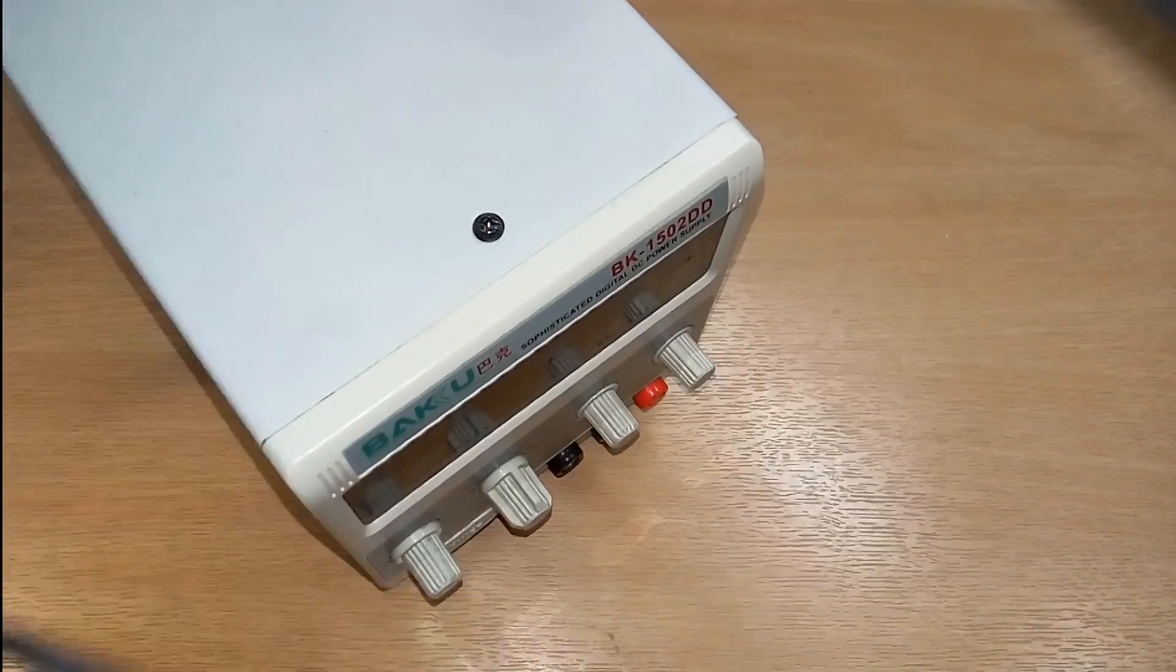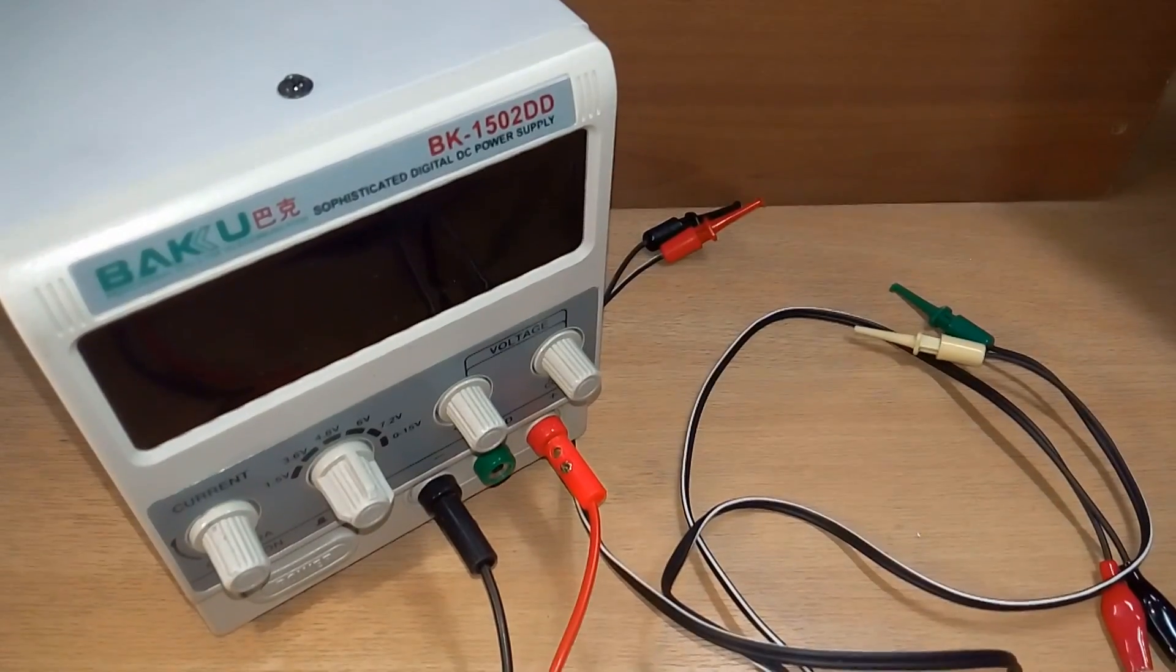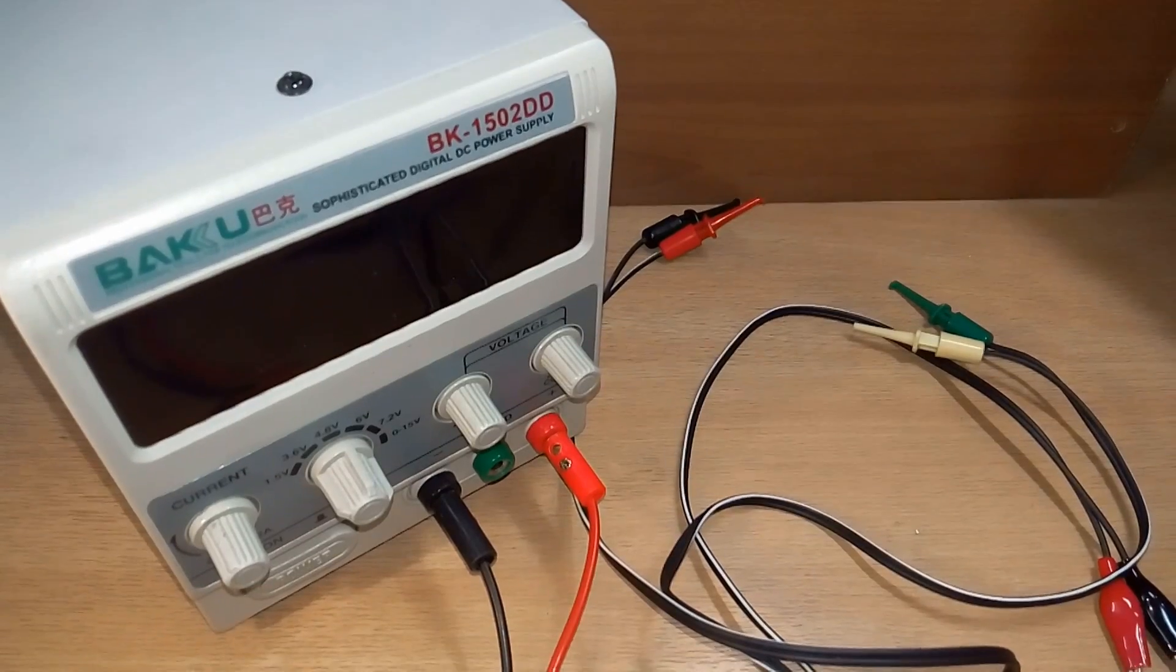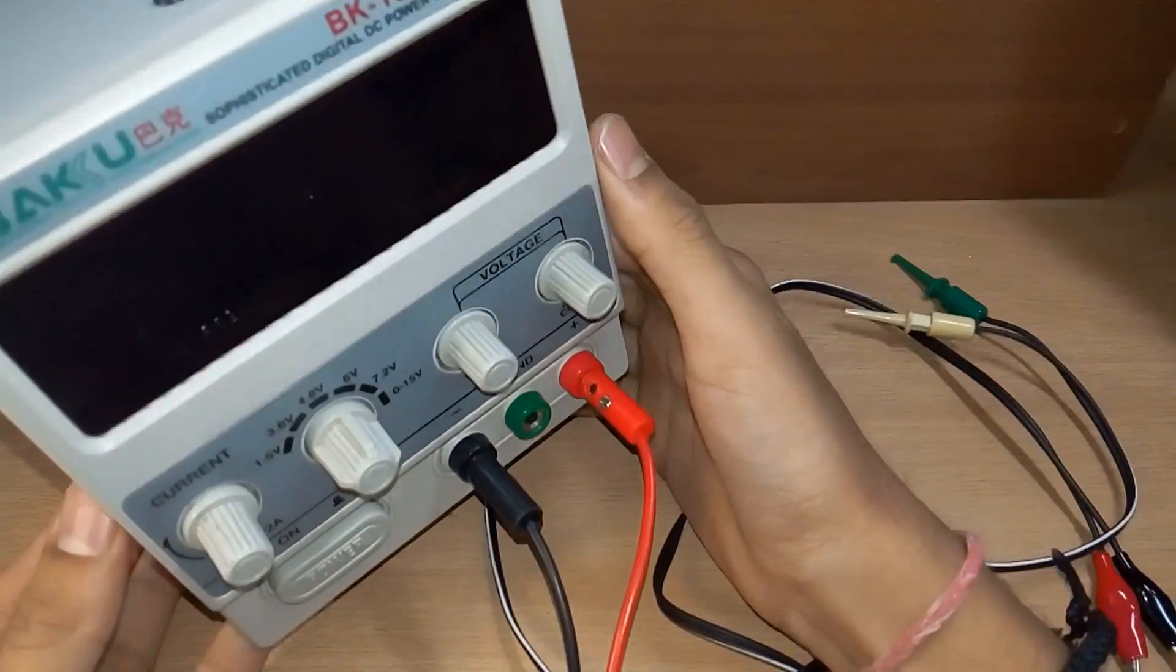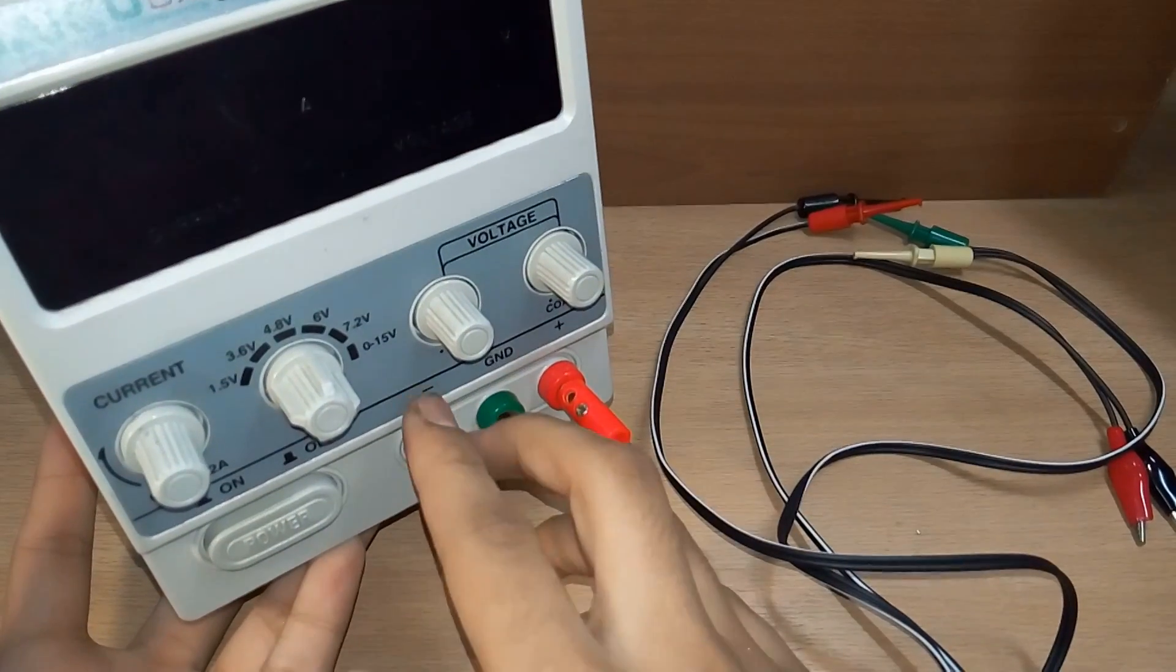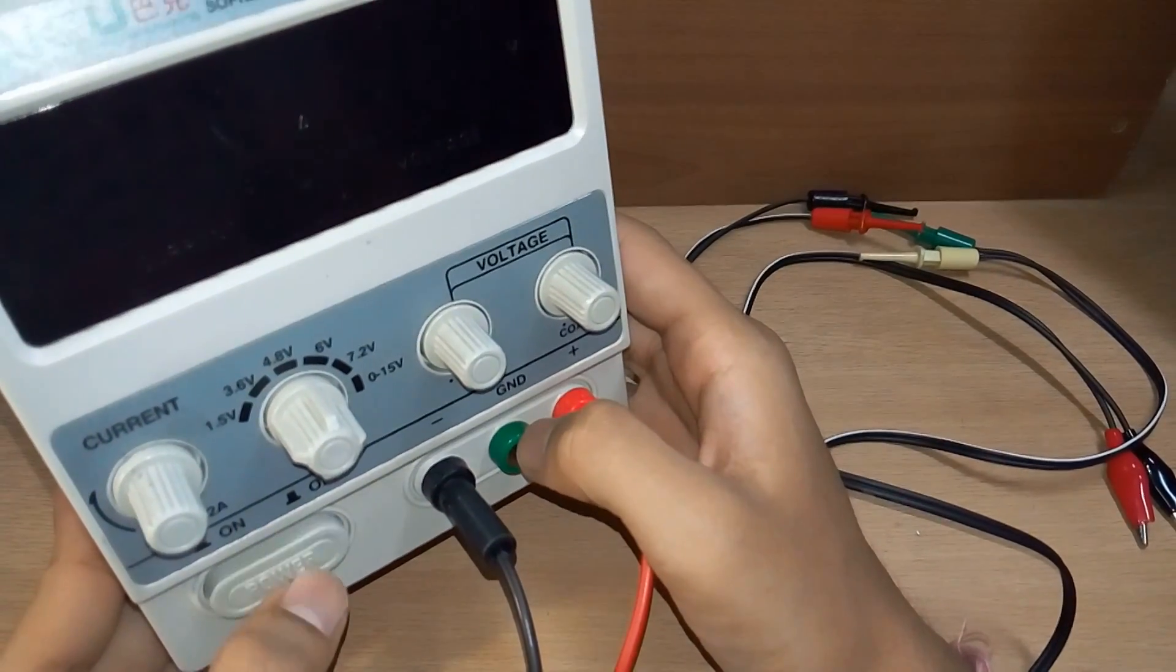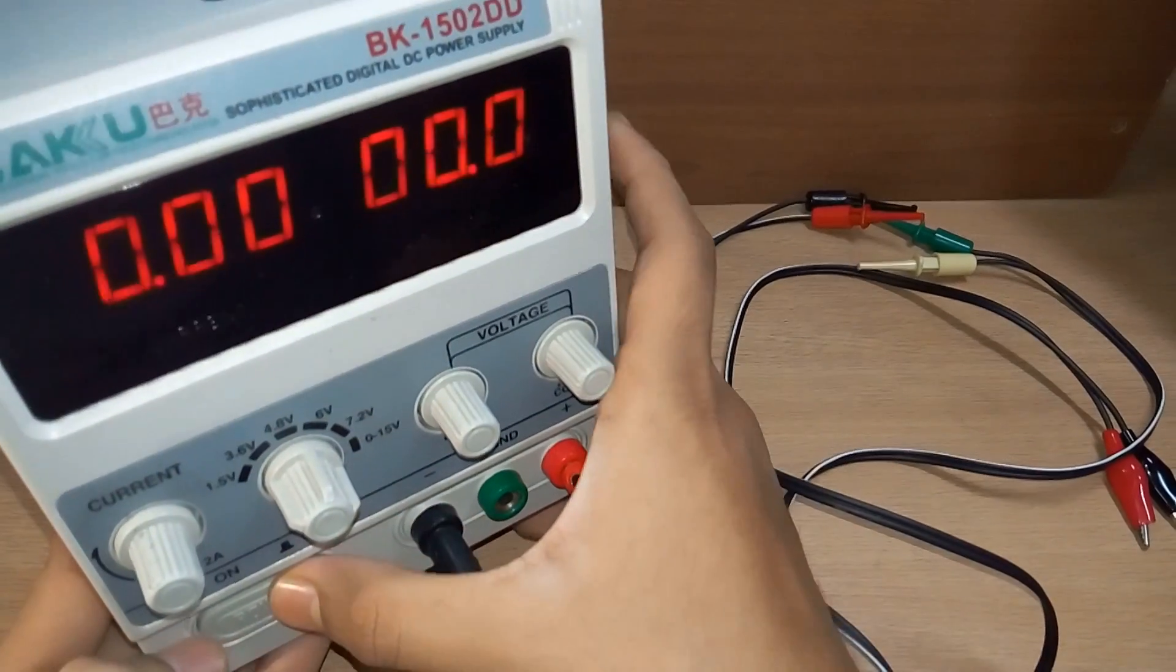Now that the power supply is set up with the wires, we have plugged in the banana plugs into the negative and positive terminals. We see here a quick easy push button on the supply for powering it on or off.